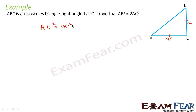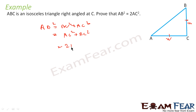Since it's a right angle at C, by the Pythagorean theorem: AB² equals BC² plus AC². Since BC equals AC, I can write AC² plus AC², which becomes 2AC². Very simple — a straight application of the Pythagorean theorem.